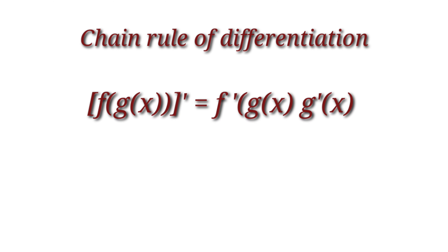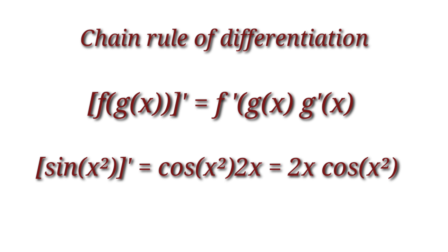The chain rule states: the derivative of f(g(x)) is f'(g(x)) · g'(x). That is, you write the derivative of the outer function f, then multiply it by the derivative of the inside function. In sin(x²), the basic function is sine and the inside function is x². So the derivative of sin(x²) is cos(x²) multiplied by the derivative of x², which is 2x. Therefore the derivative of sin(x²) is cos(x²) · 2x.